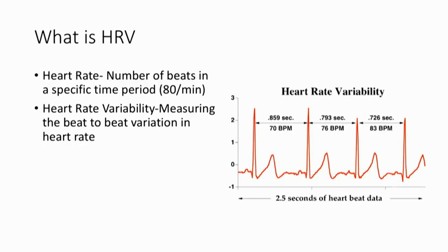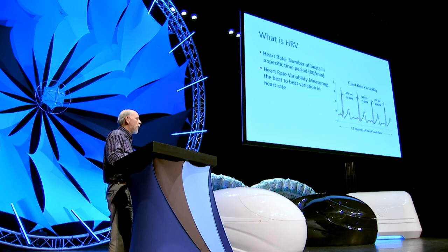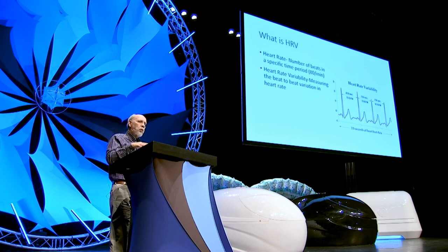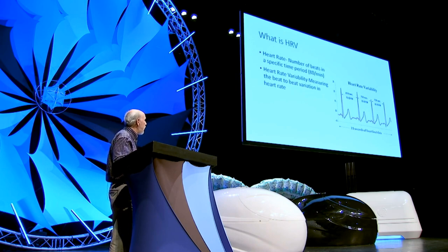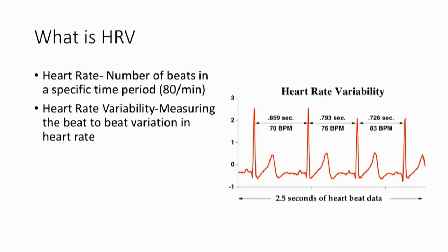What is heart rate variability? Most of us know what our heart rate is — we can use our pulse and a watch to figure out our heart rate in beats per minute. You test your heart rate before and after exercise. But what you don't know is that it's varying all the time also. The variability has to do with that space in between what you see as those spikes — you're measuring the beat-to-beat variation in the heart rate.